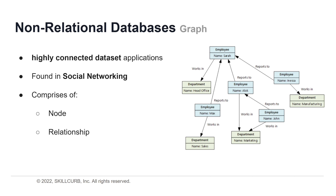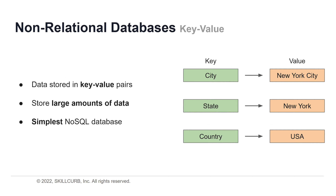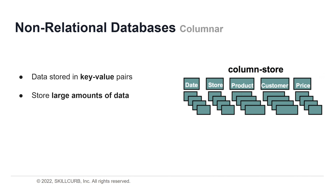Another example is an organization's personnel database structured as a graph, where entities are employees and departments, and edges indicate reporting relationships and the departments in which employees work. A key-value database stores data as a collection of key-value pairs in which a key serves as a unique identifier. The value can be any sort of byte array, data structure, or binary large object (blob), and works well for storing enormous amounts of data. Key-value stores are the simplest NoSQL databases.